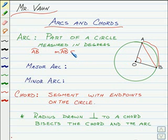So for our definition, we'll put that the measure of arc AB is equal to the measure of angle O.